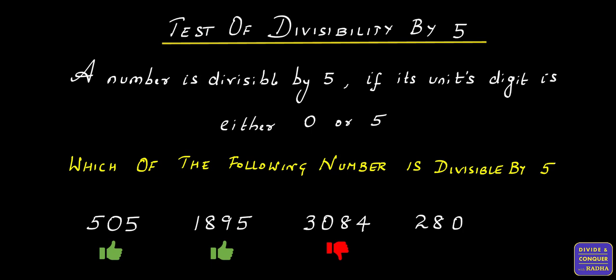The number in the unit's digit is 0, which satisfies the above rule. Therefore, 280 is divisible by 5.